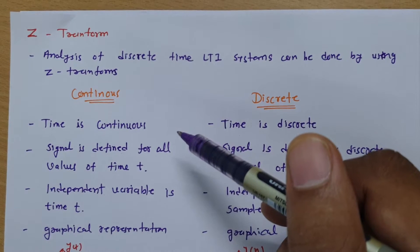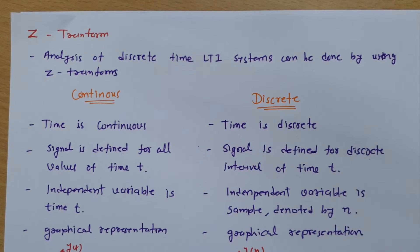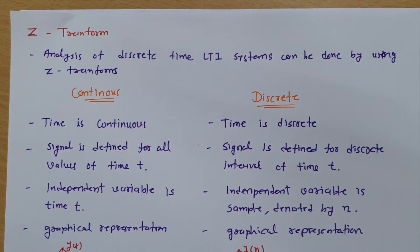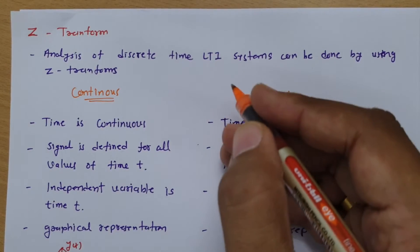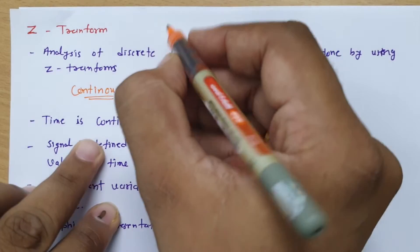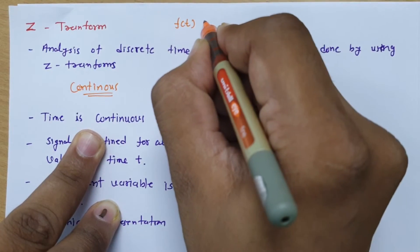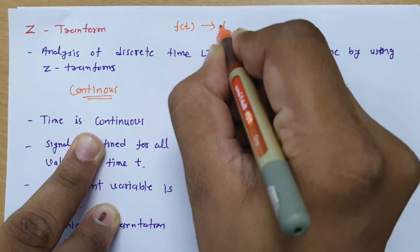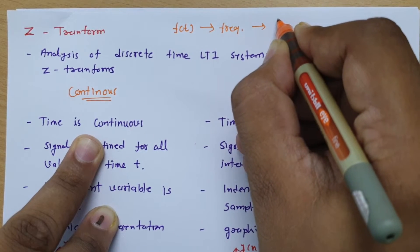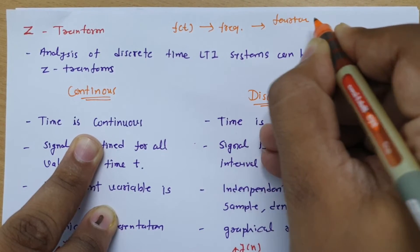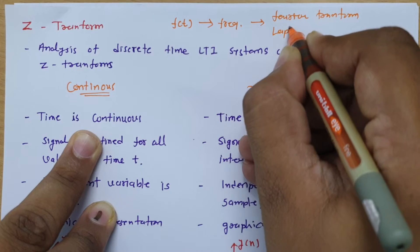Whenever we have been given with any continuous time signal and if we want to observe the frequency response of that system, in that case we usually go for Fourier transform and Laplace transform. So if you have been given with any continuous time signal like f of t and you want to see frequency analysis of that signal, we should be studying Fourier transform or one can go for Laplace transform.